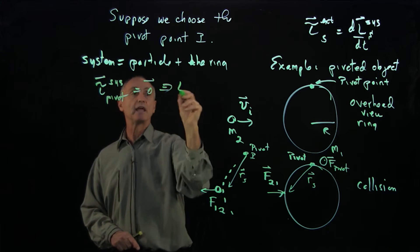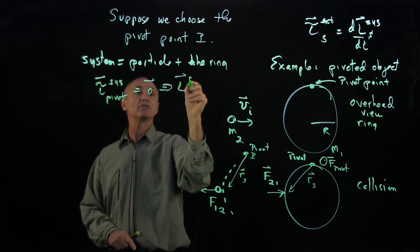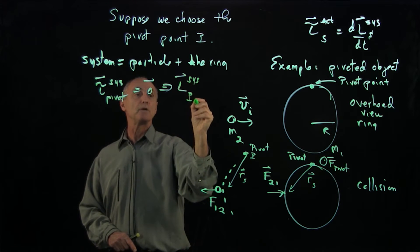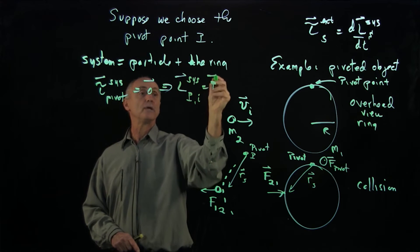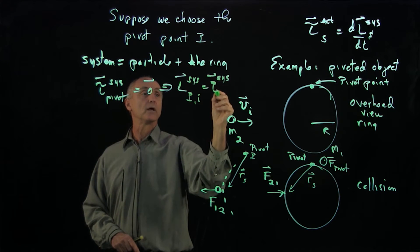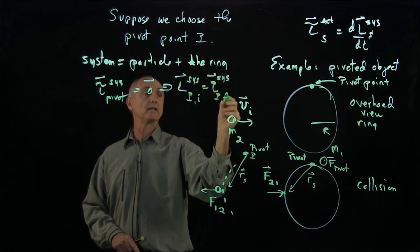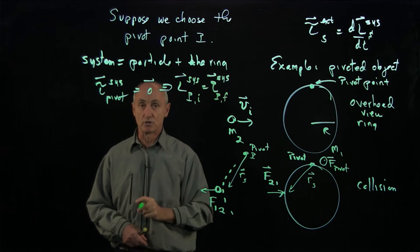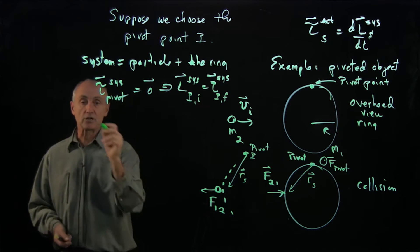And that tells us that the angular momentum of the system about that pivot point initially will be equal to the angular momentum about that pivot point finally, if we take two initial and final states.